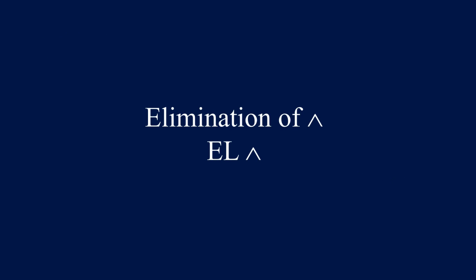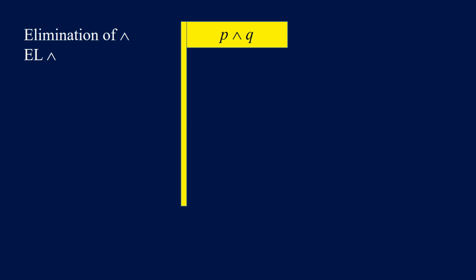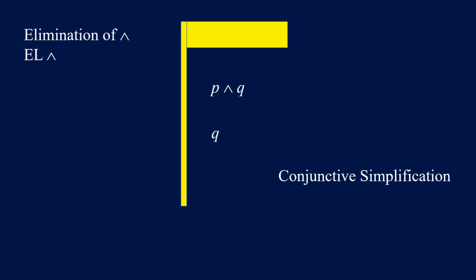Elimination of AND — if we have P and Q in the flag or under the flag, then we can conclude P. In the same way we can conclude Q. This is also called the rule of conjunctive simplification.